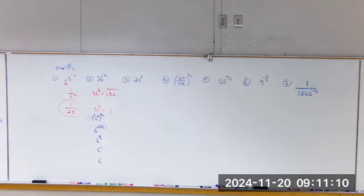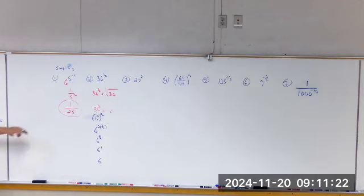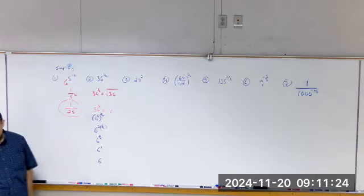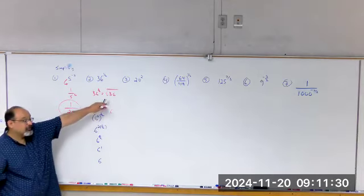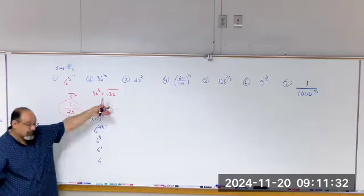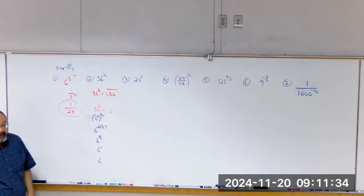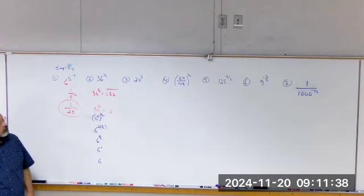We wouldn't even need rules nine and ten — we wouldn't need to convert to radicals at all. We can do it all with exponents, but you still need to be able to do those conversions. You have to make sure you understand how to convert it.